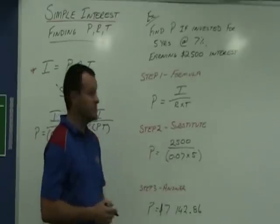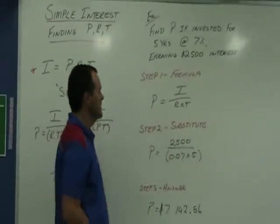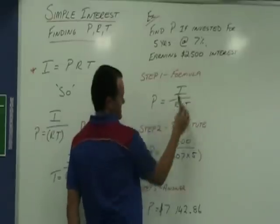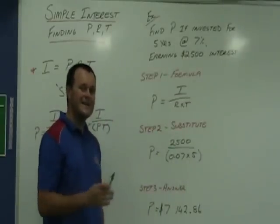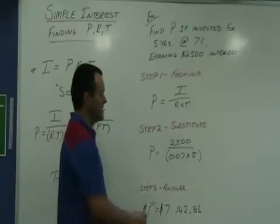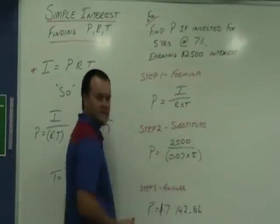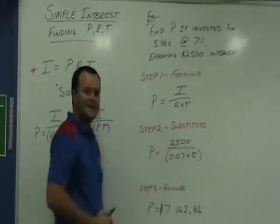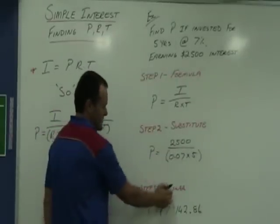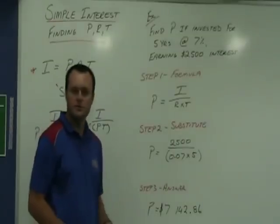Step number two, let's substitute in. We know the interest is $2,500. We know the rate is 7%. Now, remember from when we were doing simple interest, the rate needs to go in as a decimal fraction. So, that's 0.07. The time invested, five years. Let's put that into our calculator with those brackets underneath there. And step three is to get the answer. We get $7,142.86.